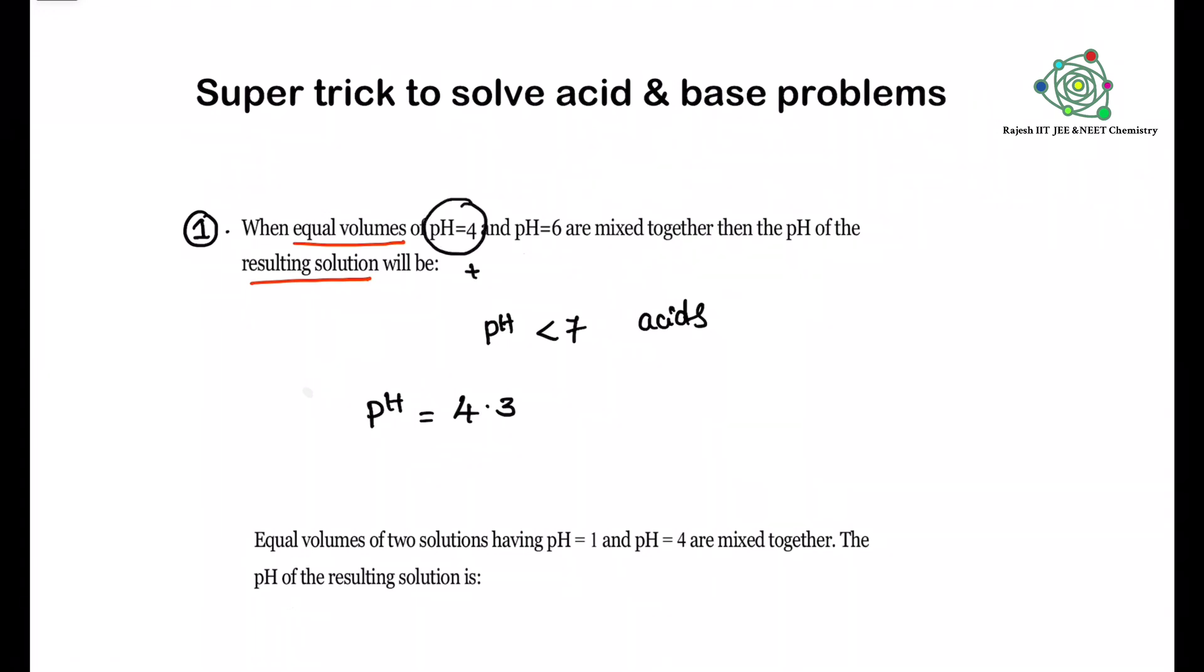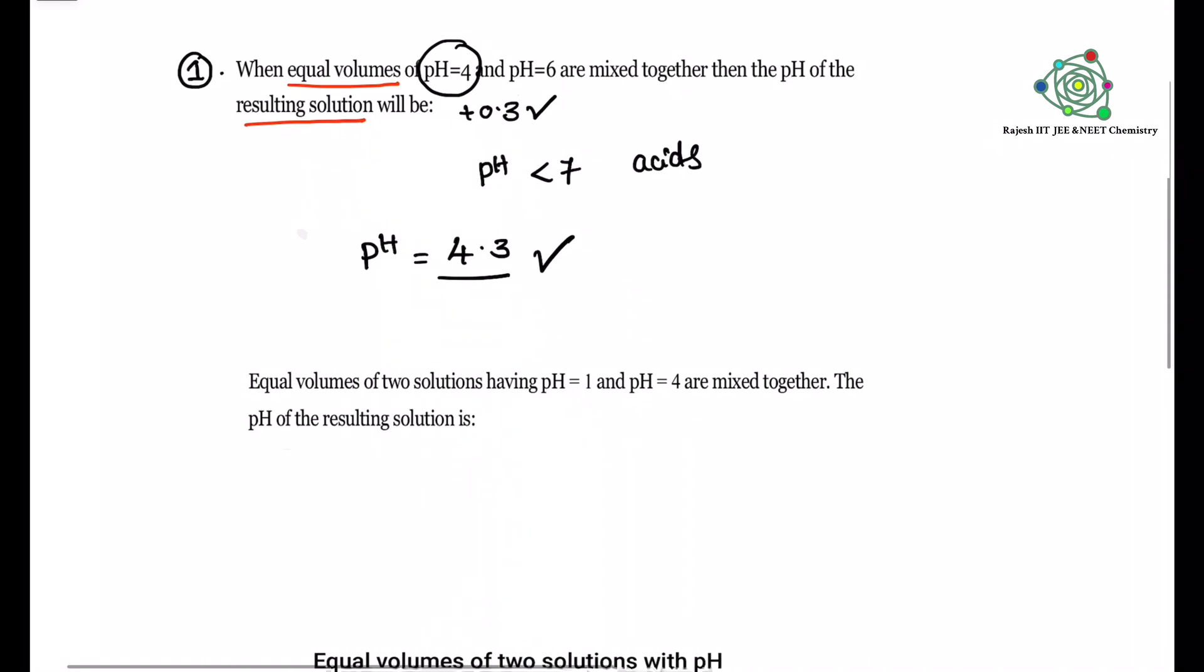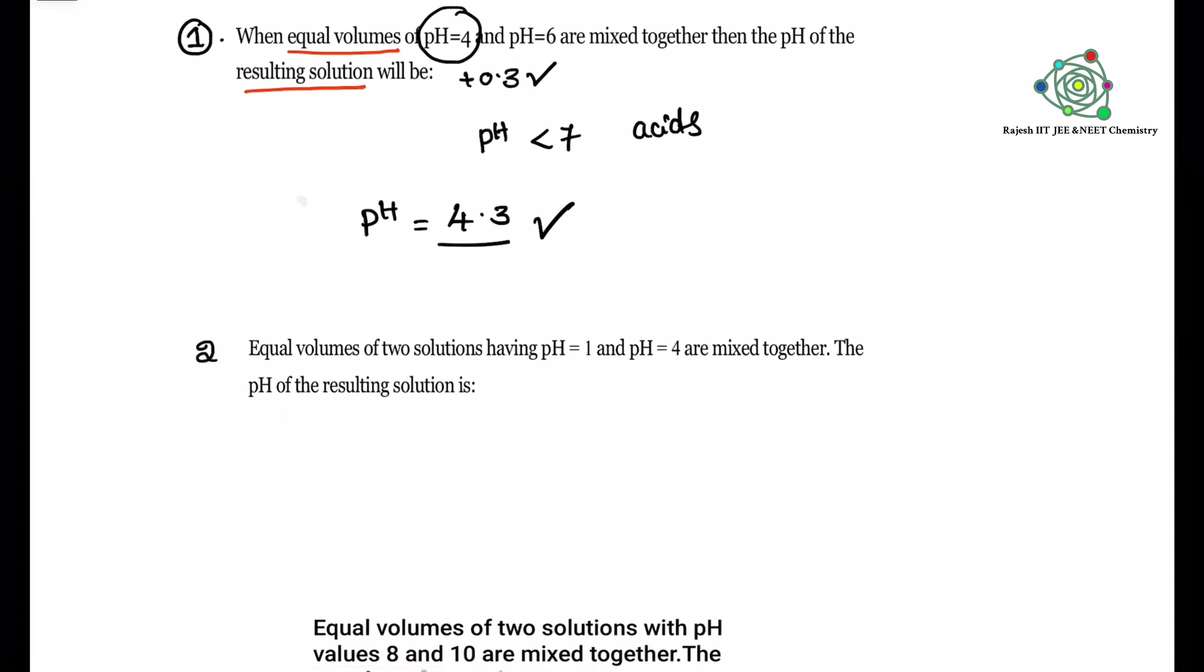The answer for this one is 4.3. How can I say? In the two solutions that pH is less than 7, the lower pH should be added with 0.3. That would be the answer. Very simple trick.